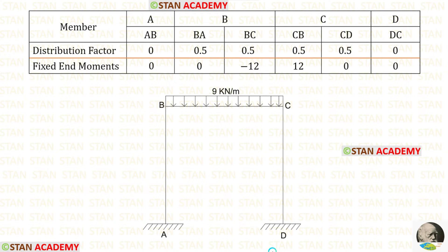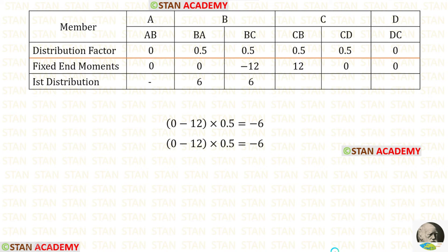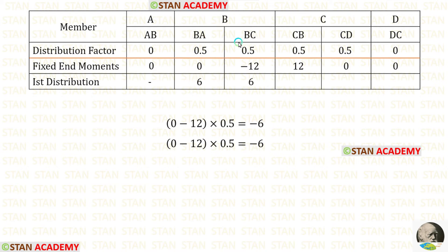Now let us start making the moment distribution table. First, let us enter all the members, then the distribution factor values, then the fixed end moments. For the first distribution at joint B: for BA, we add the two fixed end moments and multiply by the distribution factor at BA — we get a negative value, so we enter it as positive in the table. For BC, we add the values and multiply by the distribution factor at BC — we get a negative value, so we enter it as negative.